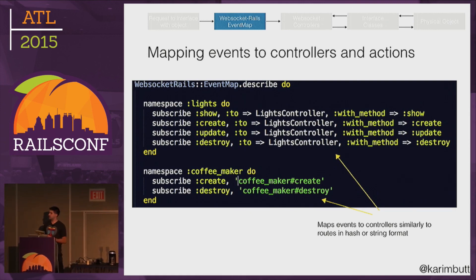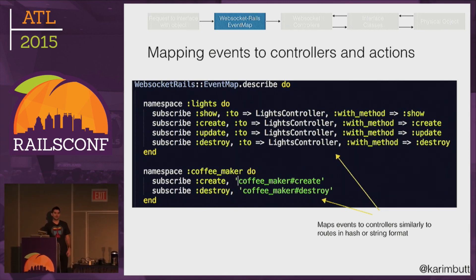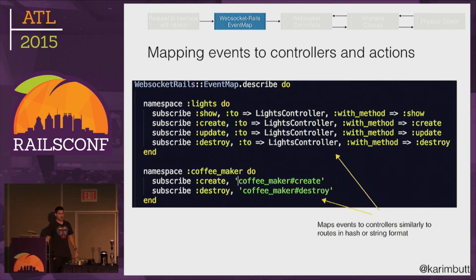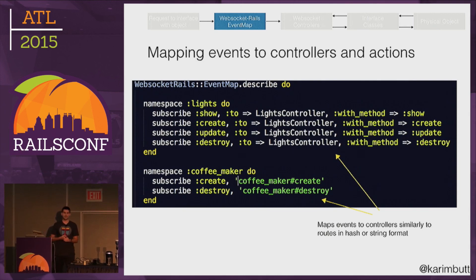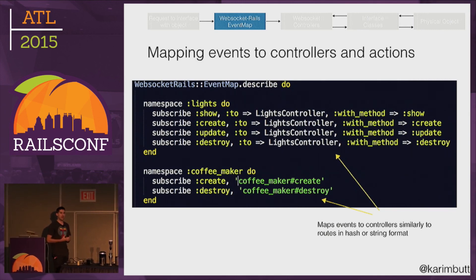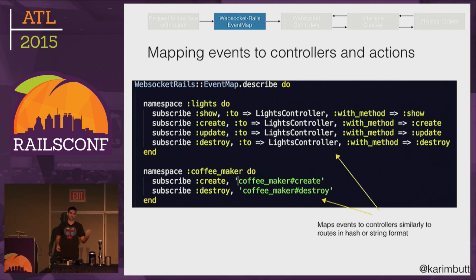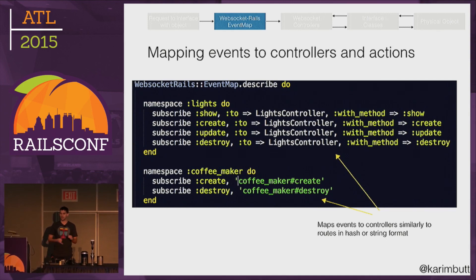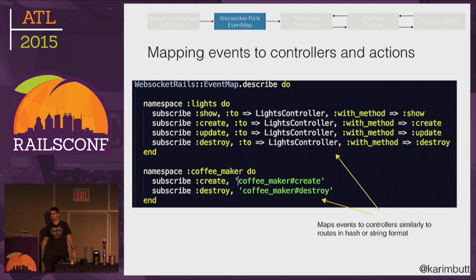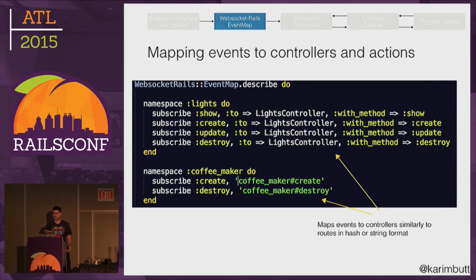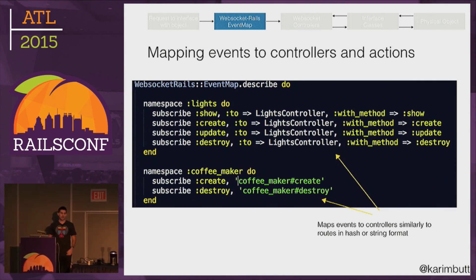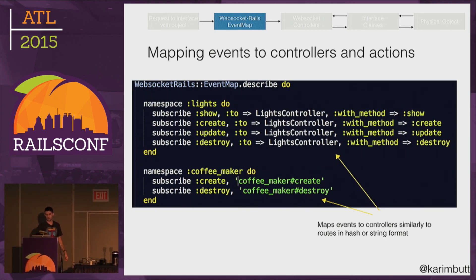I tried to be as RESTful as possible — using the light and coffee maker as examples, a create is actually turning the object on, destroy is turning it off, update is changing some attribute like brightness or color with new RGB values, and show returns some status like the light's color, on/off state, and brightness values. Note that some of the code I'm going through is paraphrased for simplicity — the full source code is on GitHub and I'll have that link available.